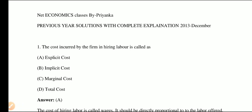Our first question is: the cost incurred by the firm in hiring labor — which type of cost is this? Option A is the explicit cost. Option B is the implicit cost. Option C is the marginal cost. Option D is the total cost.